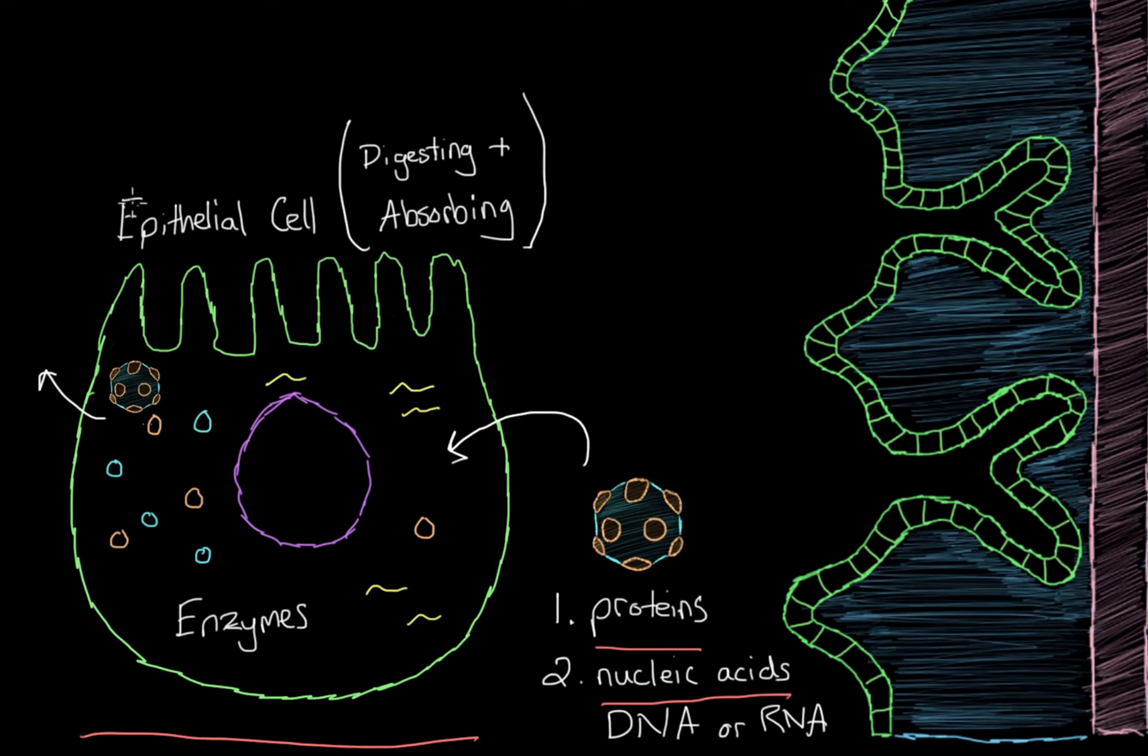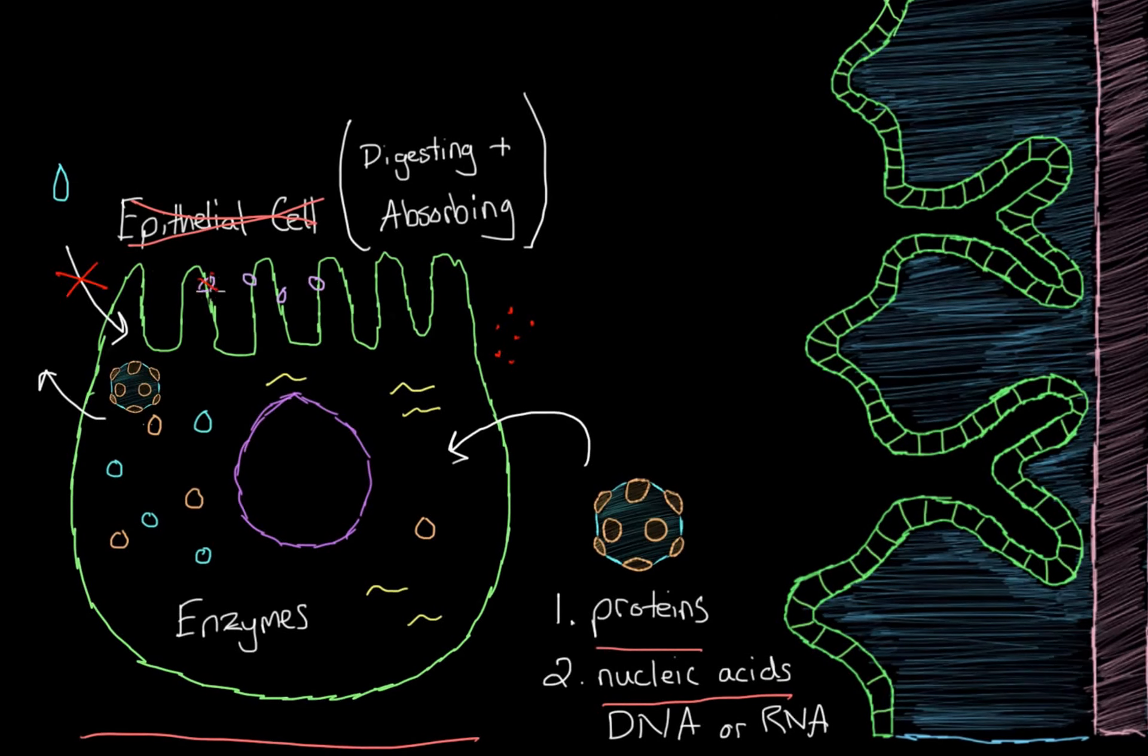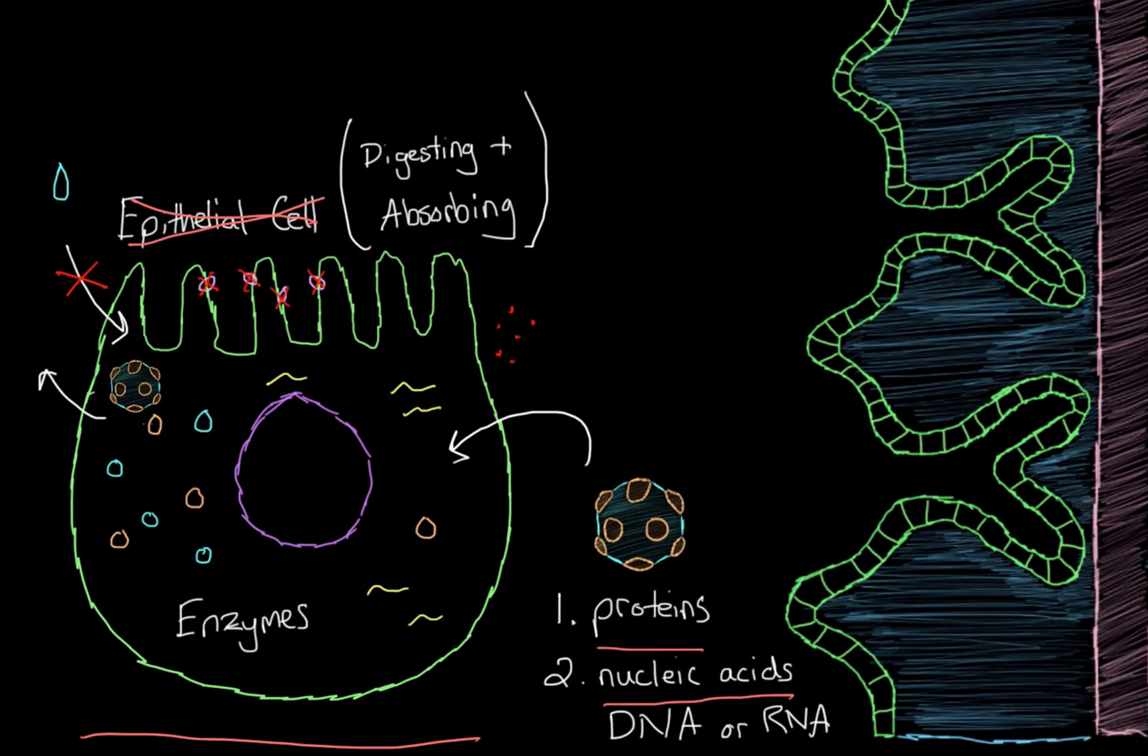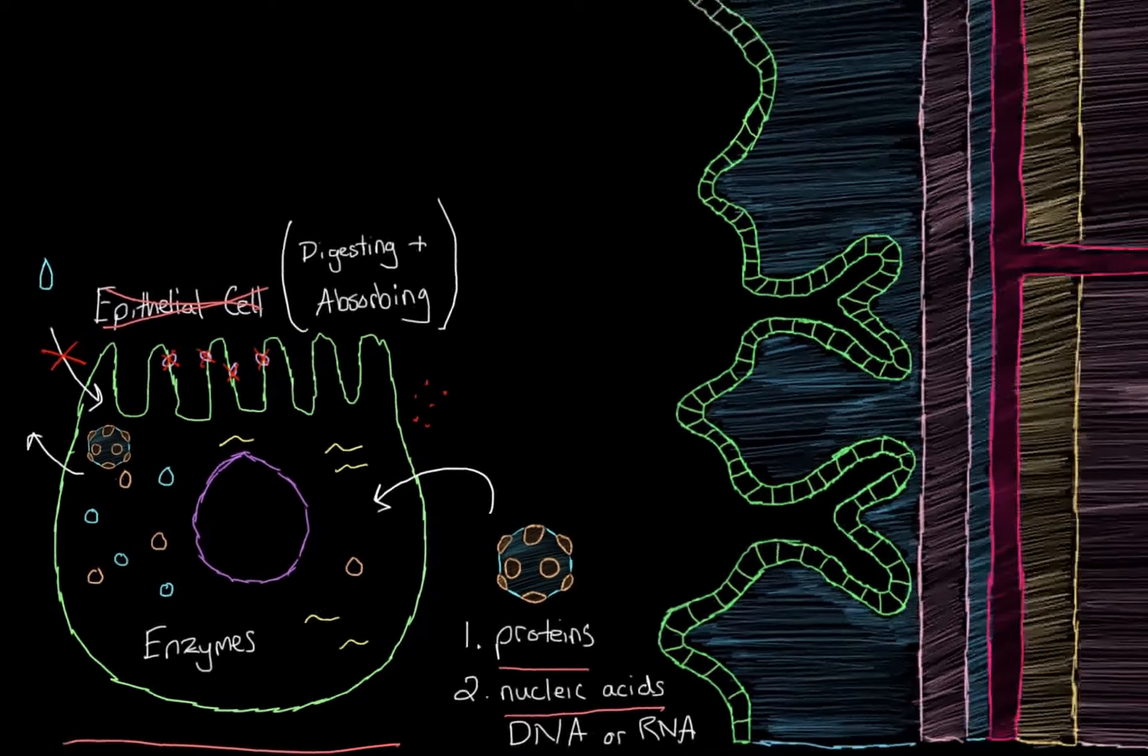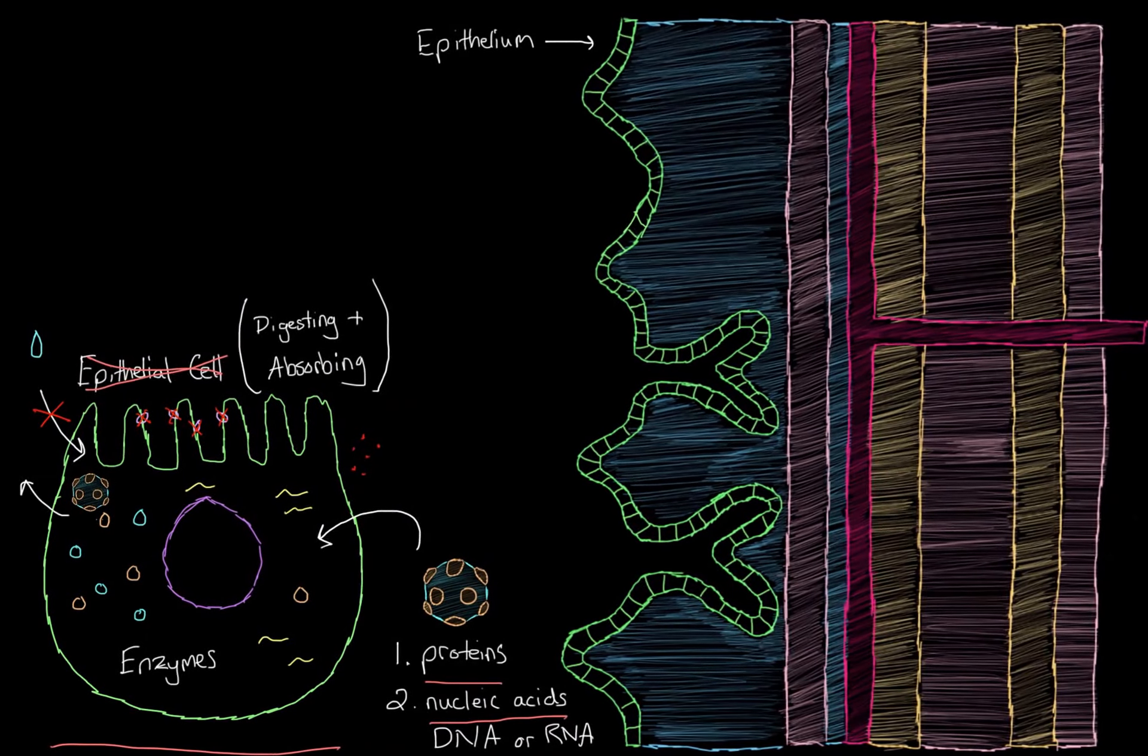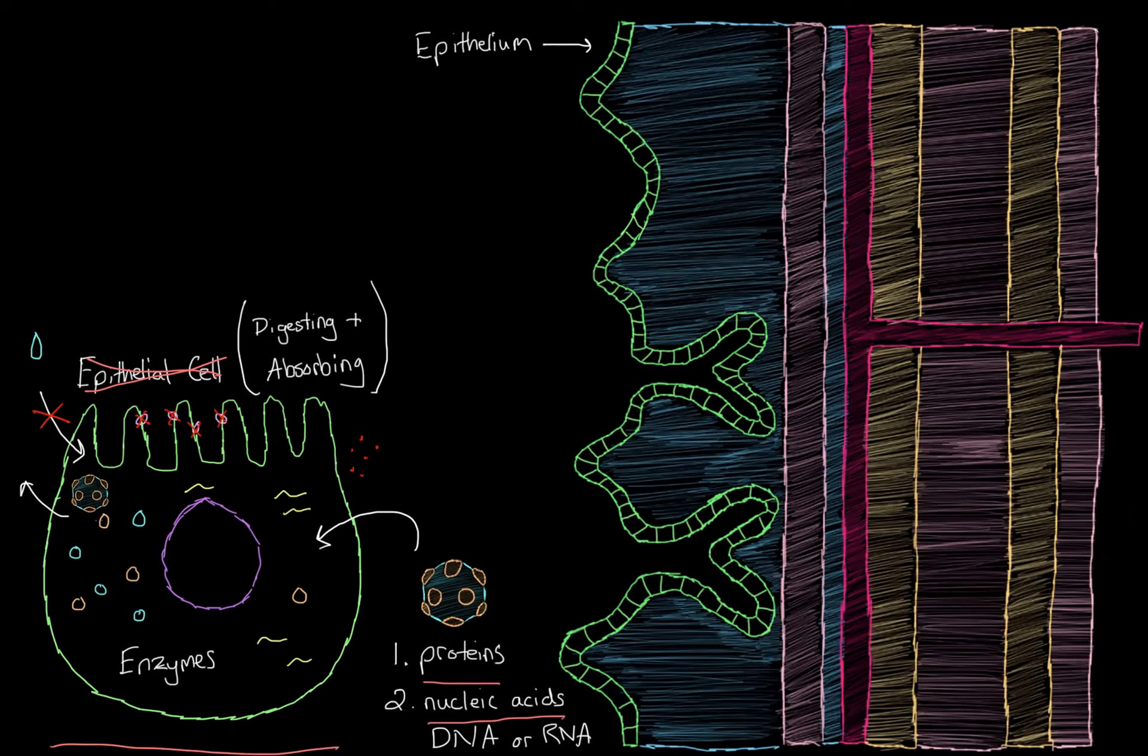In addition to that, the virus is actually going to shut down many of the functions of the epithelial cell. Maybe it will release some toxins that can do a lot of damage to the epithelial cell. So for example, it will stop the epithelial cell from absorbing water. It can also deactivate certain proteins on the intestinal gut lining that are responsible for digesting your food. So all in all it really stops the epithelial cell from doing what it needs to do, and it just turns it into a virus making factory.